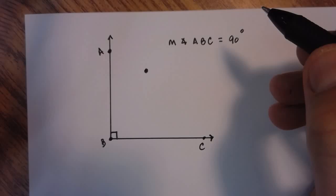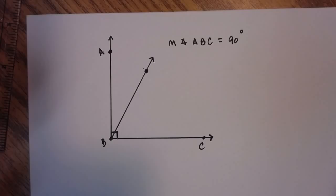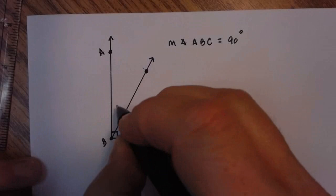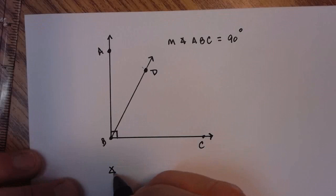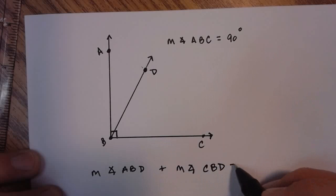If for some reason you connected a third ray from that vertex point, what you've done now is separated this into two smaller angles within that 90 degree angle. What happens now, if this is, call this point D, angle ABD plus the measure of angle CBD now will equal 90 degrees